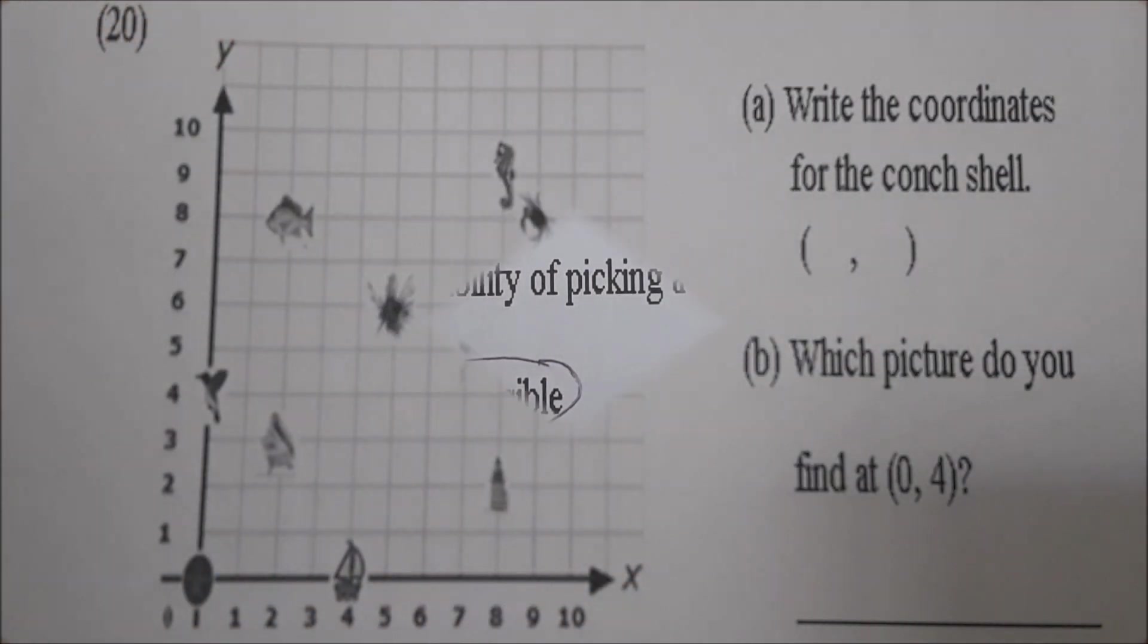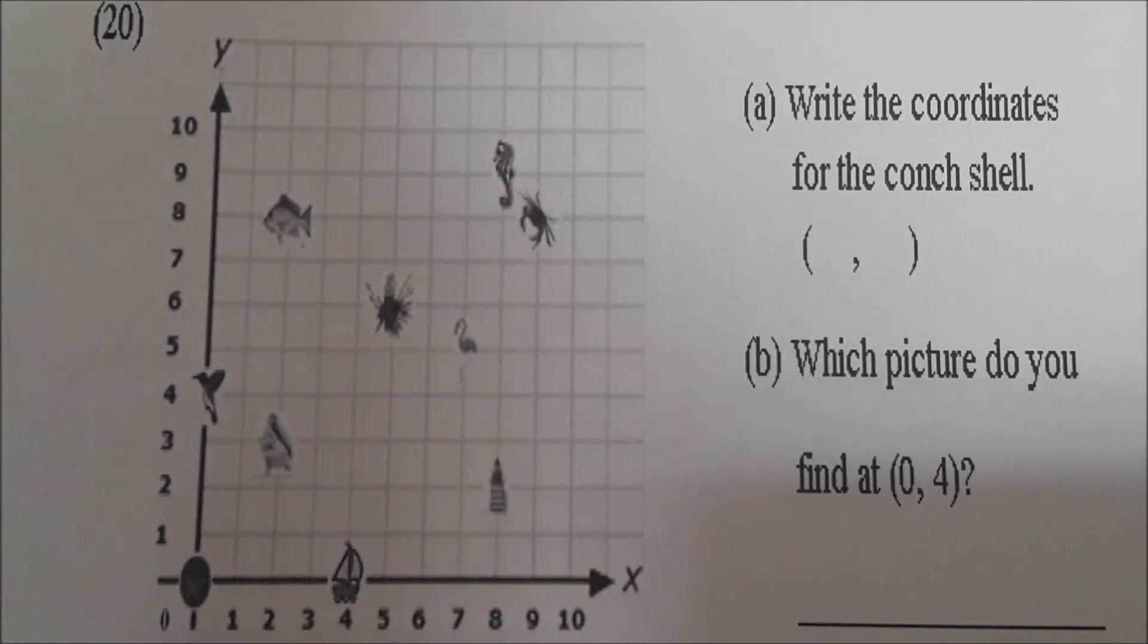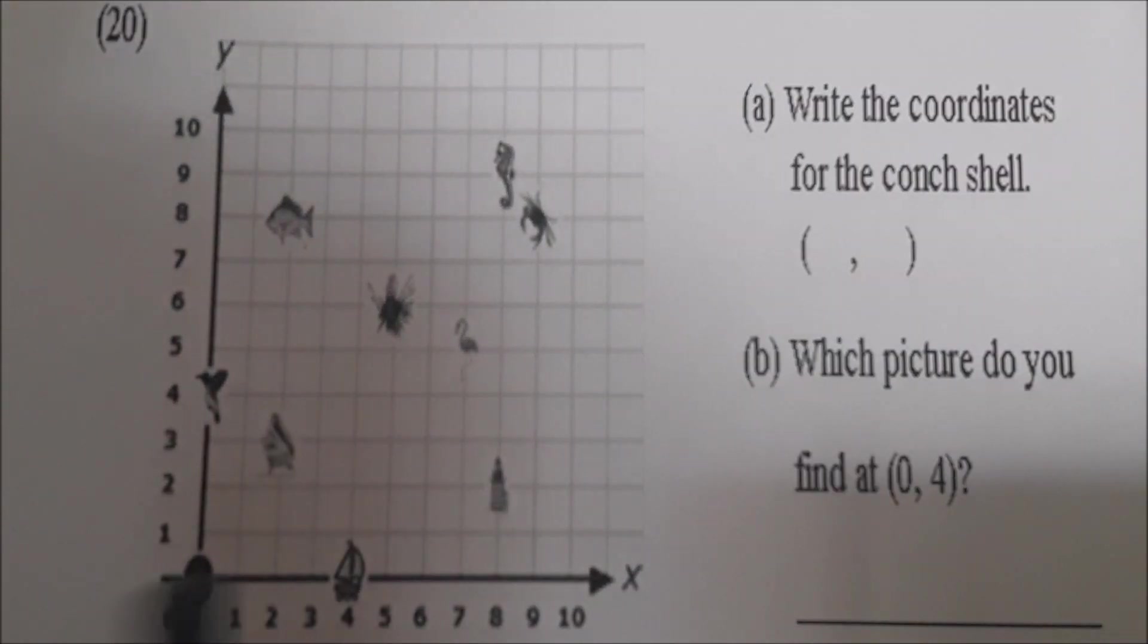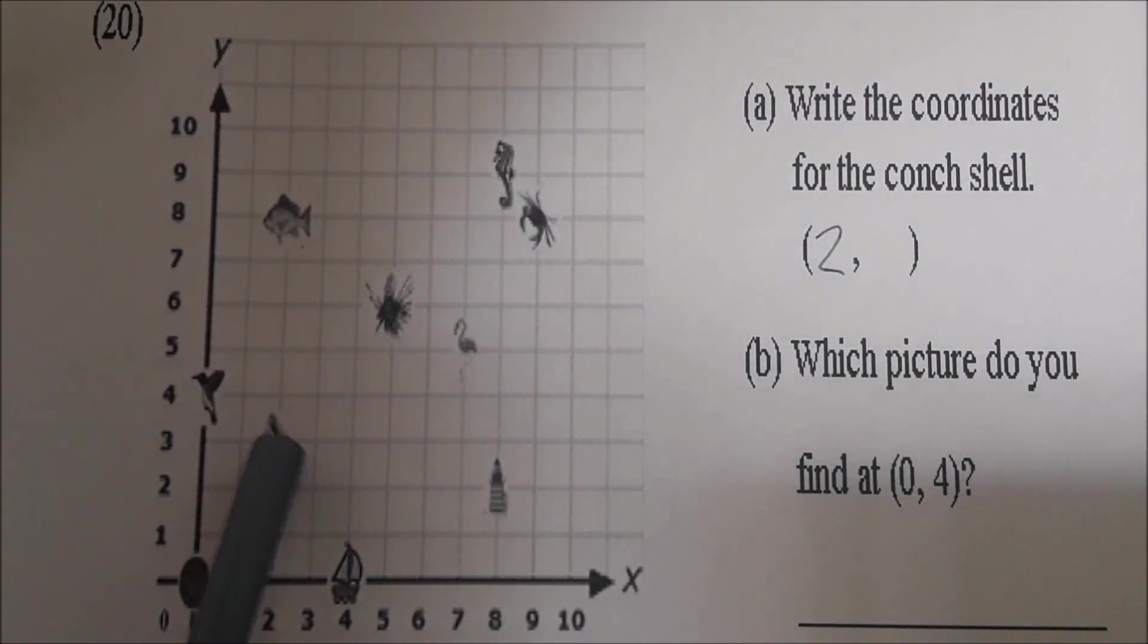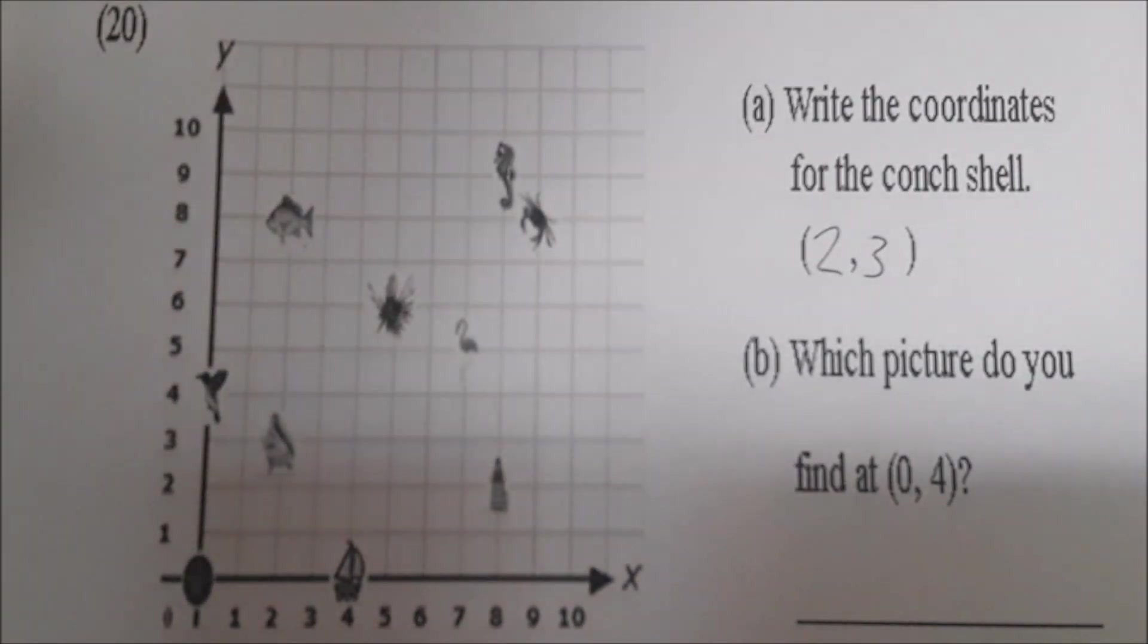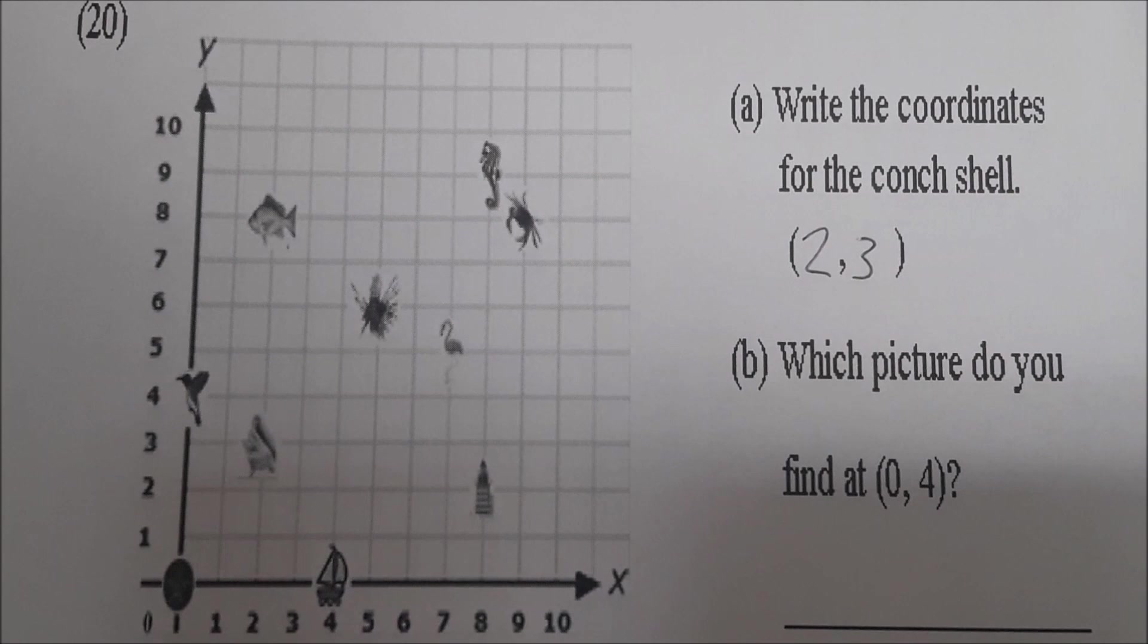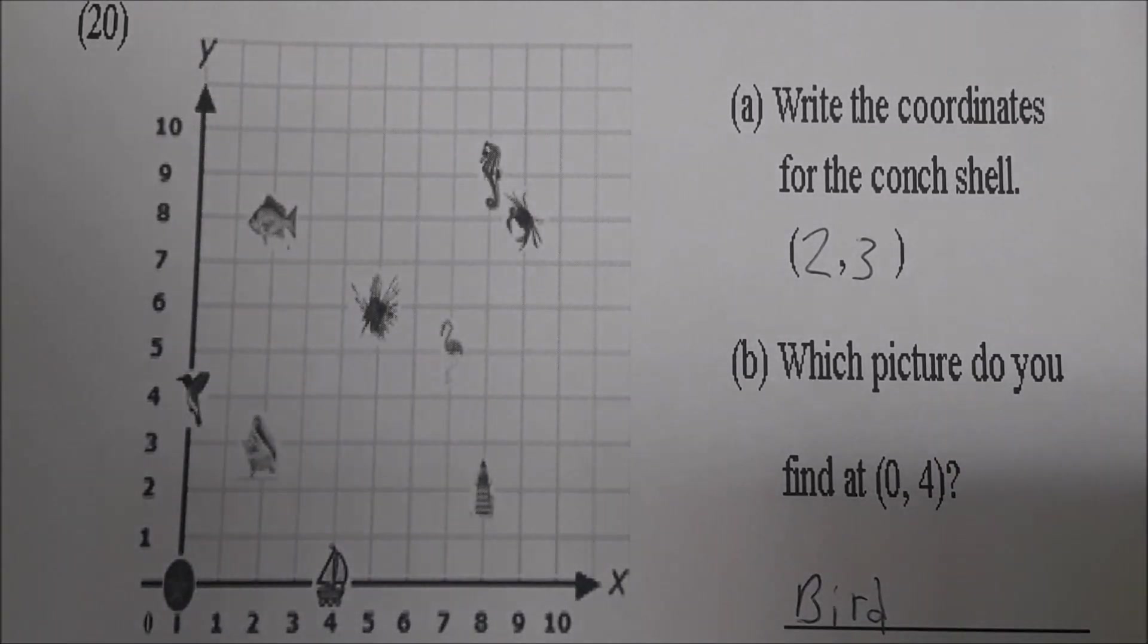We want the last question, number twenty. Okay, the final question, number twenty. Read it for us, Sky. Write the coordinates for the conch shell. The coordinates for the conch shell is A. Let's do that first. Go to the conch shell and let me see you do the coordinates. So you go to the conch shell and where do you go? Down. What number? Two. Write it in. Excellent. You go to the conch shell. Where do you go next? Three. Across. Across. To the left. And you put that number in. That's it. The coordinates would be two comma three. Now, read B. Which picture do you find at zero and four? Show me zero and four. Right. So you go to zero then you go up on the Y to four. What picture is that? Bird. A bird. So just write bird and that would be it. It's a hummingbird. But if you put bird, it's just as good. Very good. Sky Bryce. There you have it.